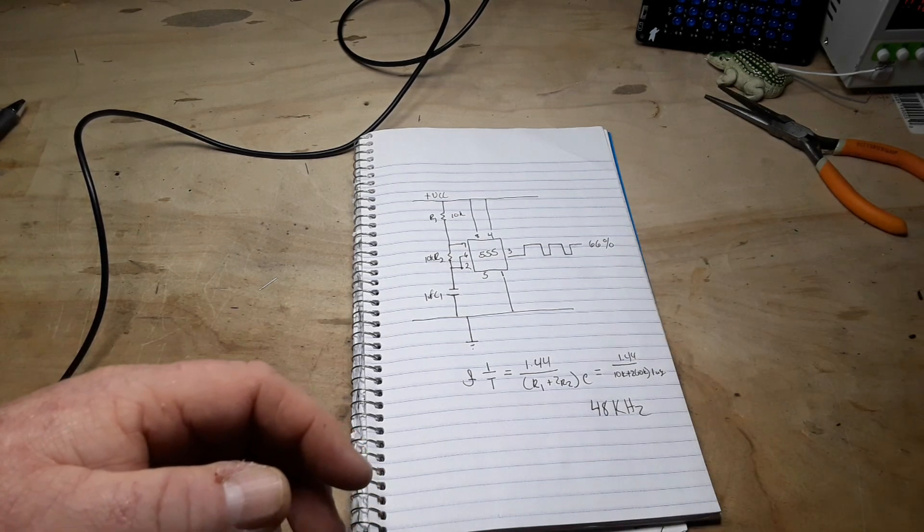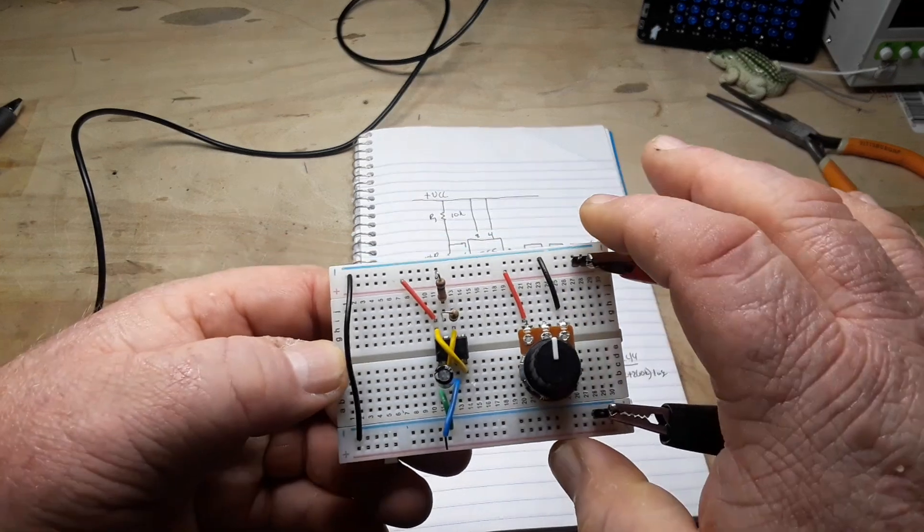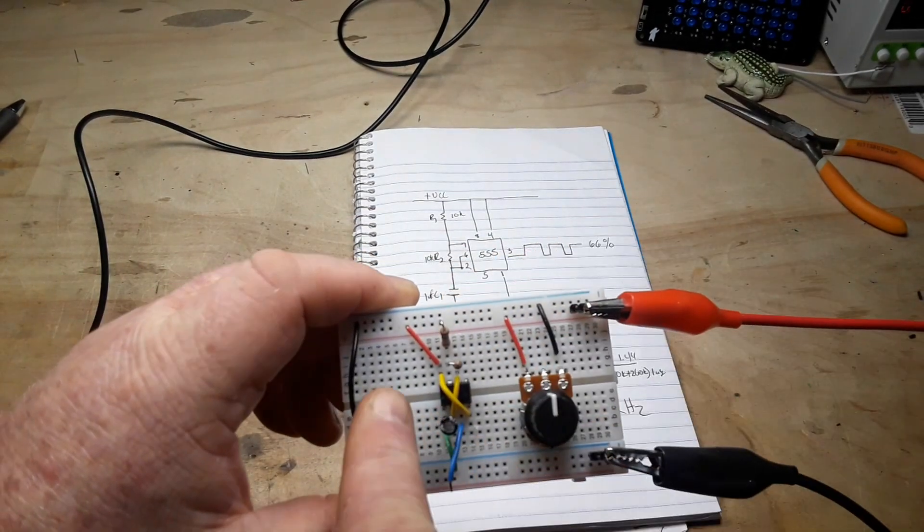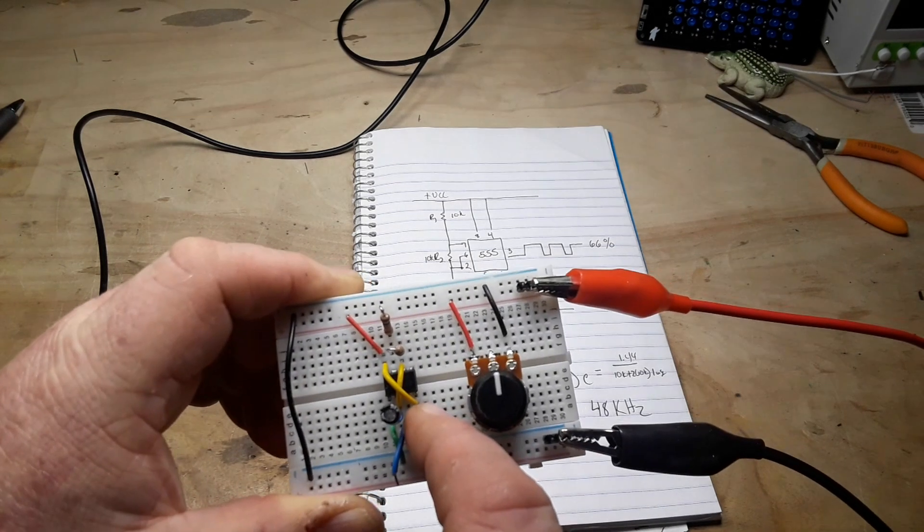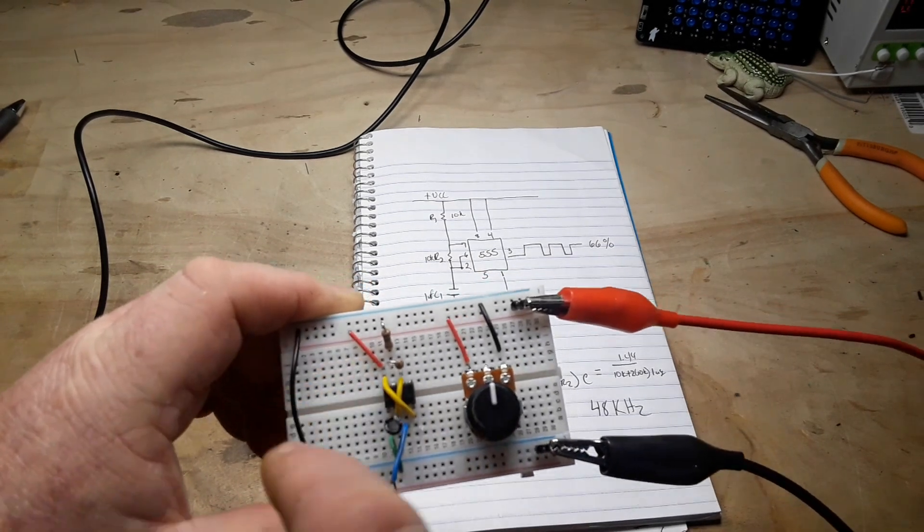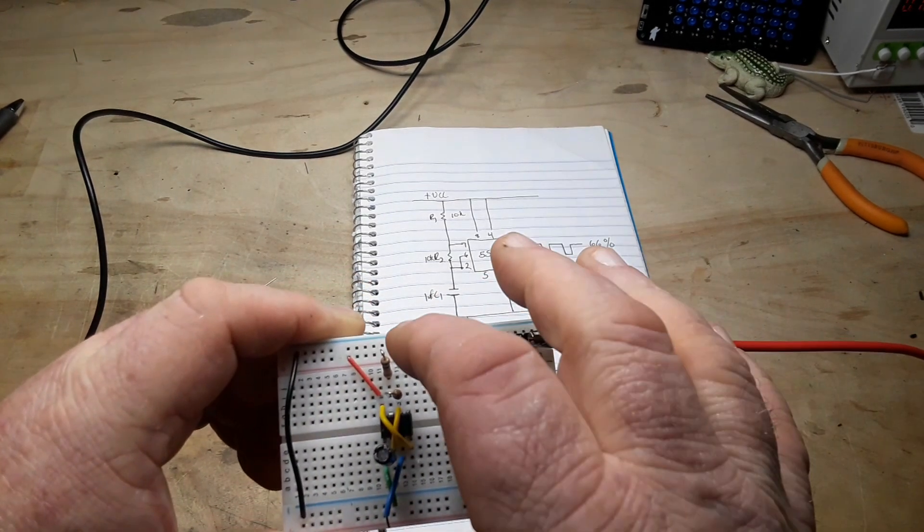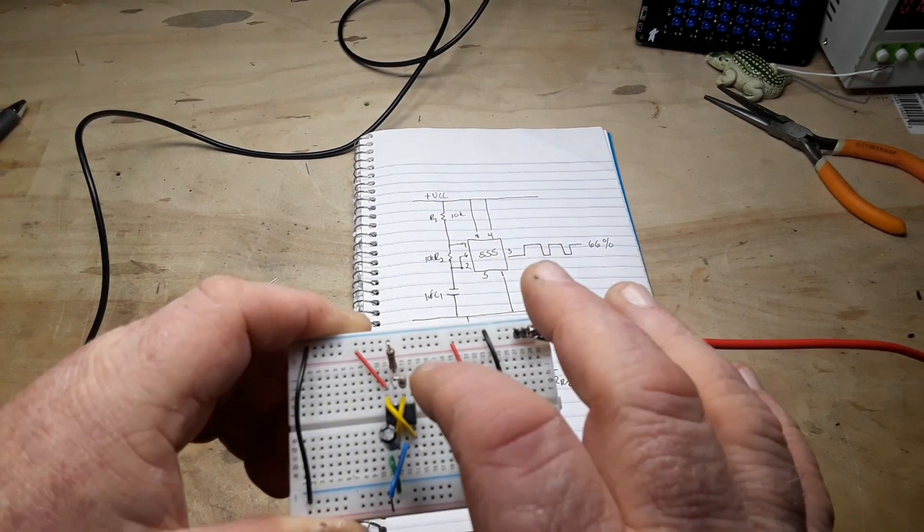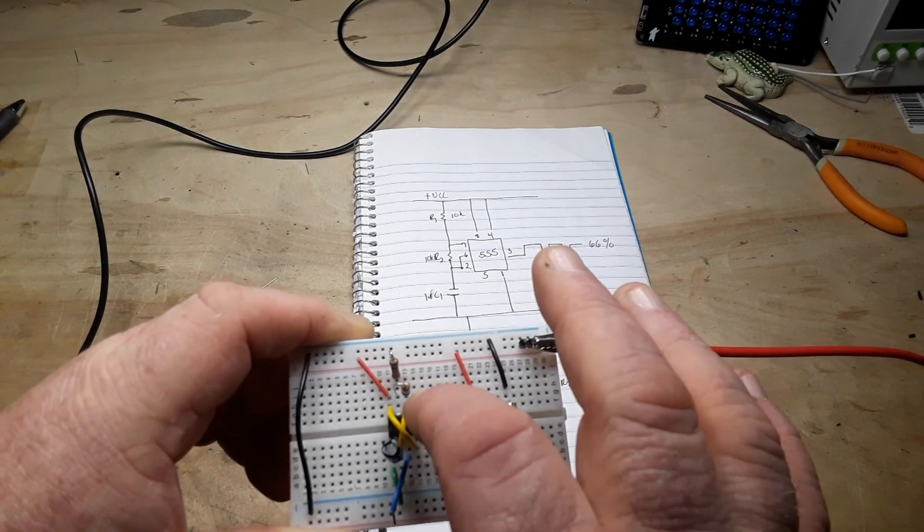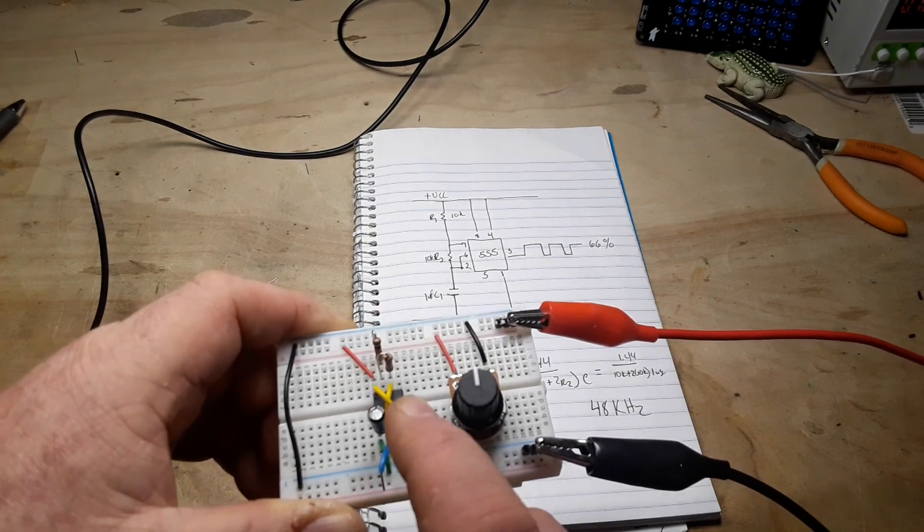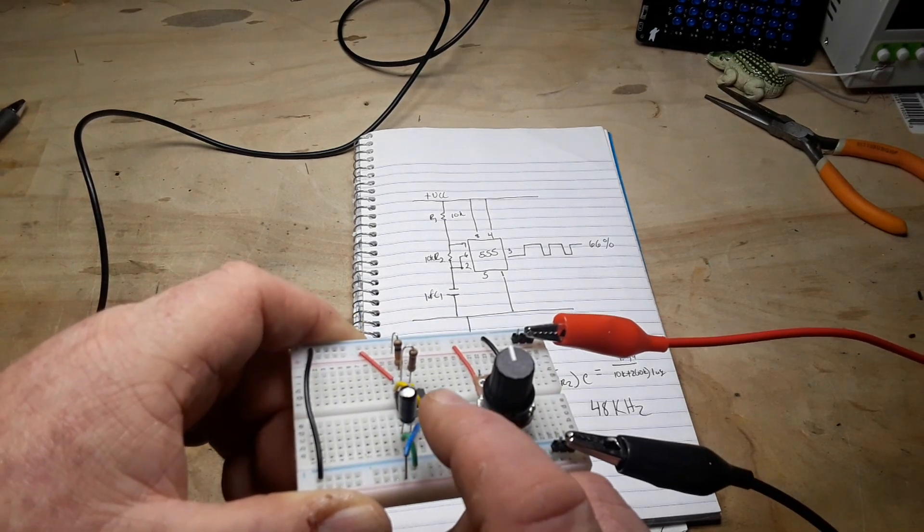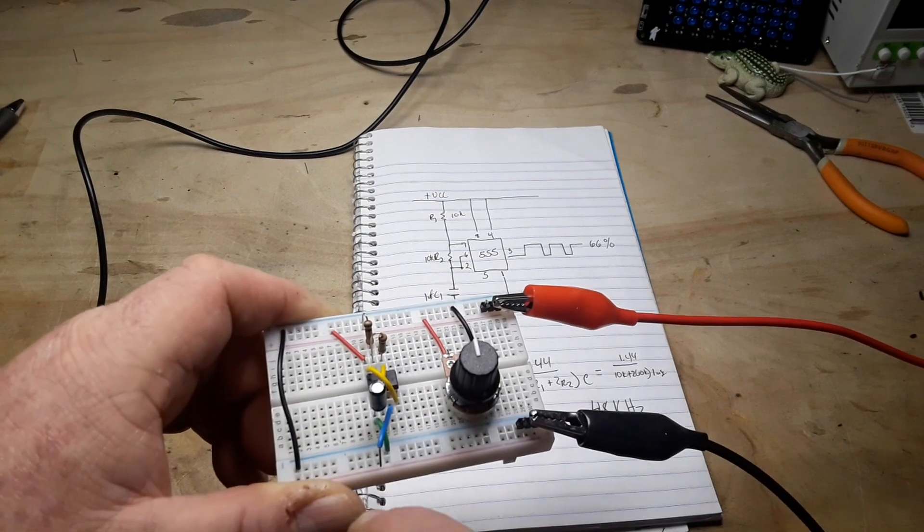So here is the simple circuit I put together. We have VCC going into pin 8. Pin 4, which is our reset, also goes to VCC. I've just jumped it over there. We have one 10K resistor going to pin 7 which goes to pin 6 which has jumped over to pin 2.